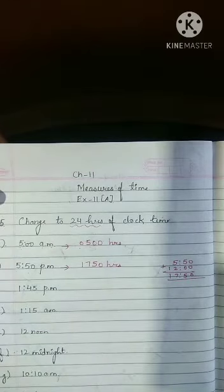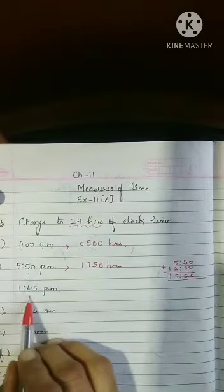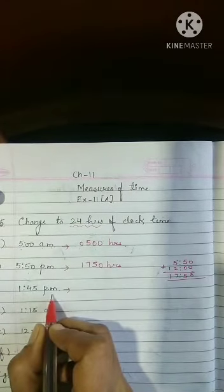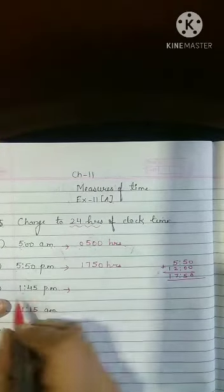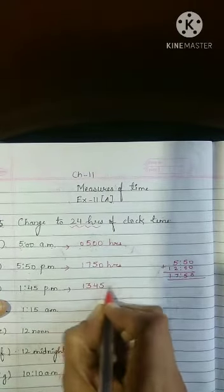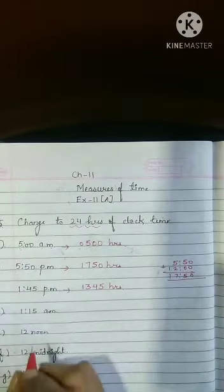Am I clear to all? Now 1:45 pm. 1:45 pm means afternoon. So after 12 it will become 13. 1 means 13. So 13:45 hours.